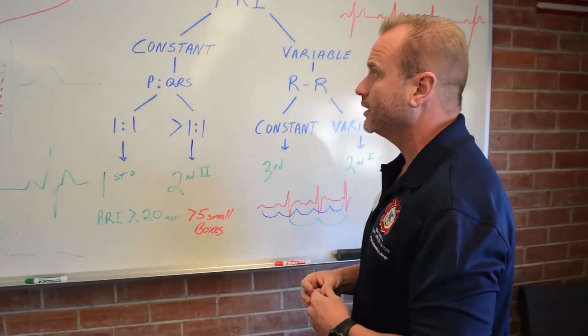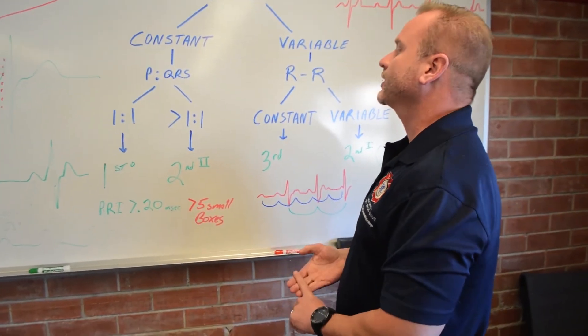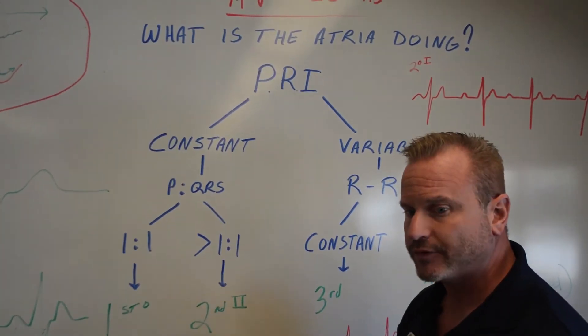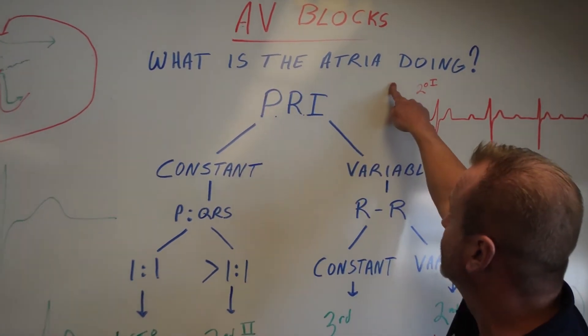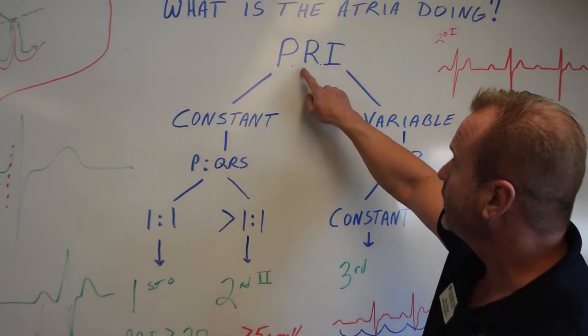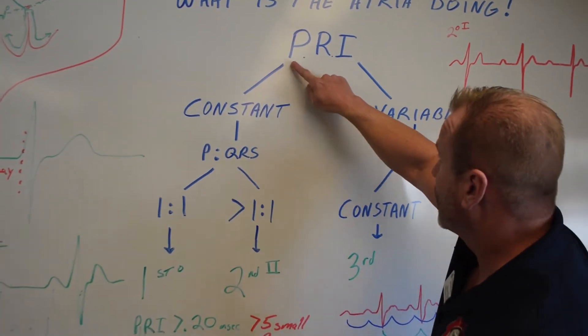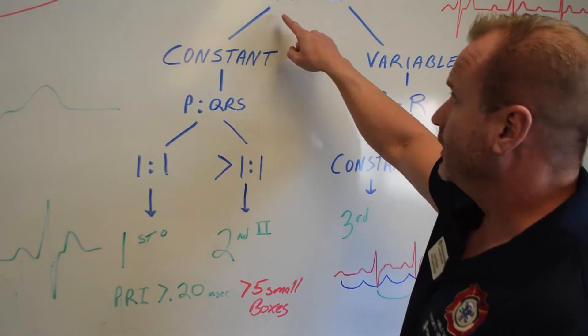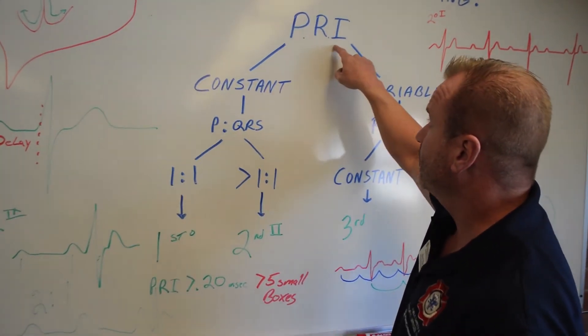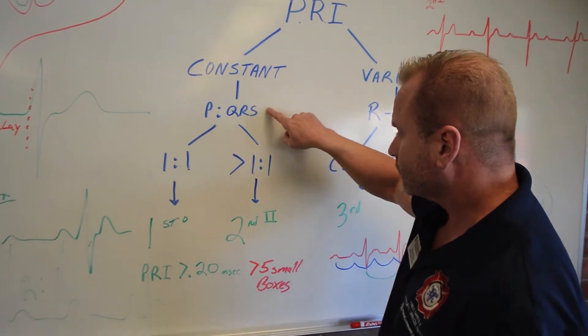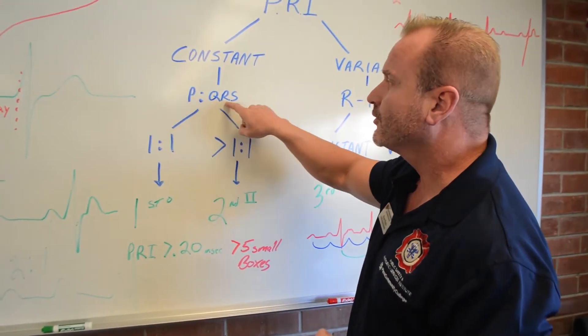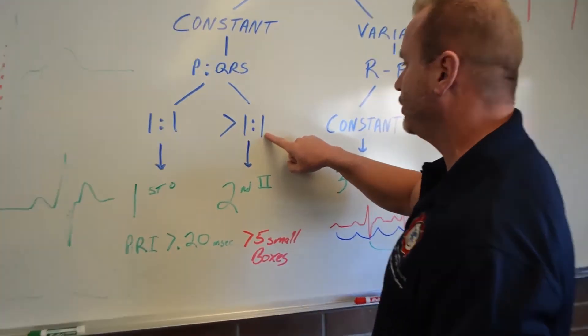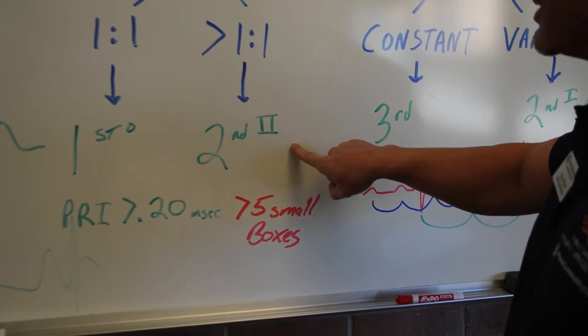Once again, when you ever hear the word AV block and you have to decipher it, ask yourself, what is the atria doing? Let's go back to our PRI, our PR interval. Is it constant or is it variable? In this case, with a second degree type two, our PRI is constant. But what happens? Do I have one P for every QRS? Well, in this one, I don't. I have more Ps than I have QRSs.